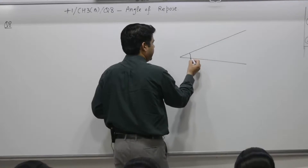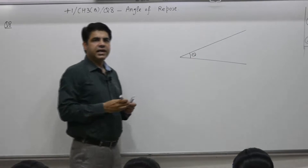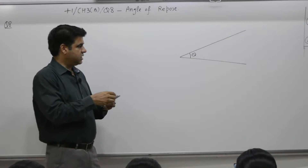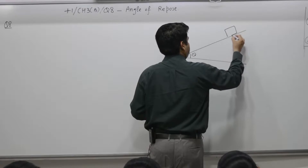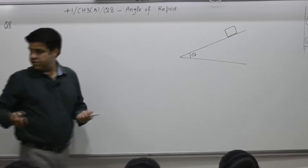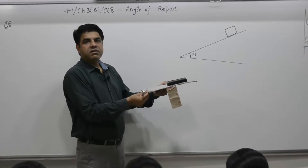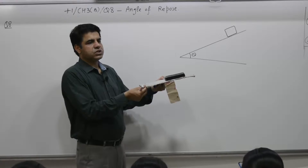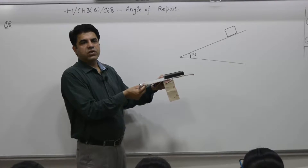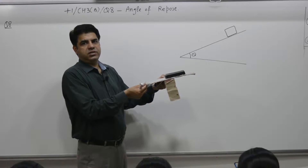There is an inclined plane and let us assume that theta is the angle of repose — the angle at which the object just starts sliding. When the angle is 10 degrees, why is the object not sliding? What causes the object to slide down and what opposes it? There are two issues: what supports its motion, and something that will oppose its motion.